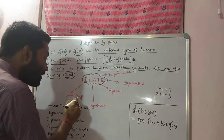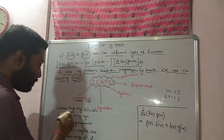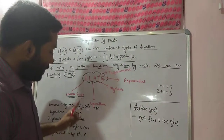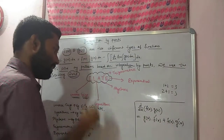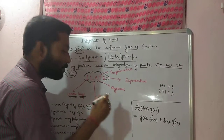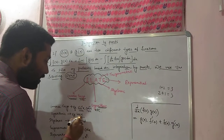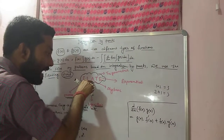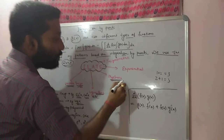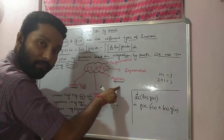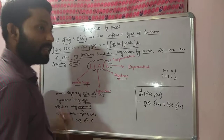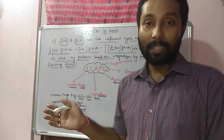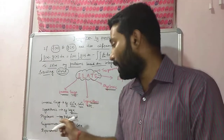I stands for inverse trigonometric function — for example, sine inverse x, cos inverse x, etc. L stands for logarithmic function — for example, log x. A stands for algebraic function — that means all kinds of polynomial functions, including linear, quadratic, bi-quadratic, and so on.